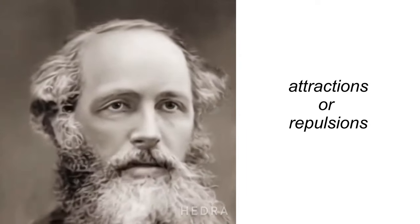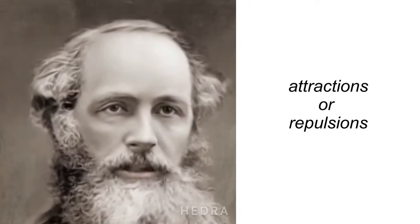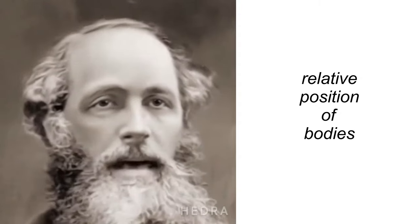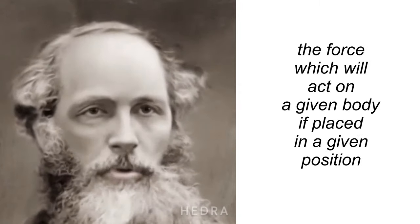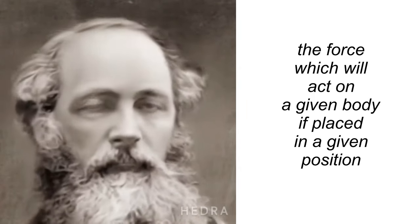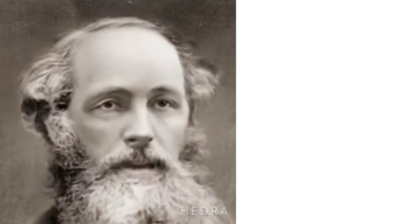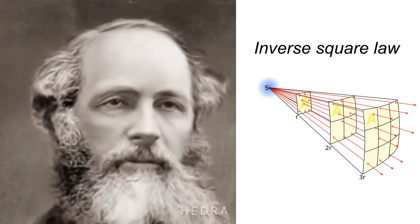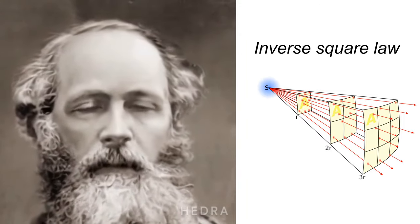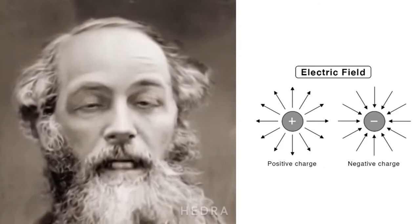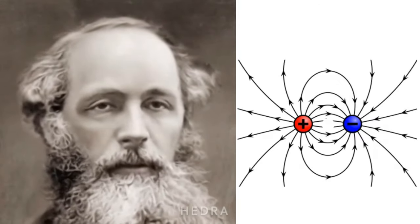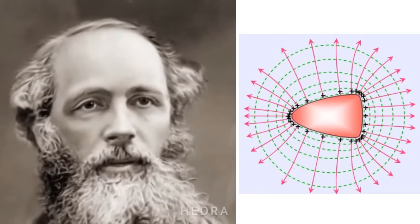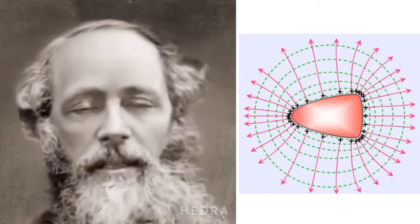In all phenomena involving attractions or repulsions, or any forces depending on the relative position of bodies, we have to determine the magnitude and direction of the force which would act on a given body if placed in a given position. In the case of a body acted on by the gravitation of a sphere, this force is inversely as the square of the distance and in a straight line to the centre of the sphere. In the case of two attracting spheres, or of a body not spherical, the magnitude and direction of the force vary according to more complicated laws.